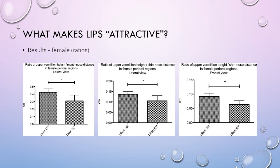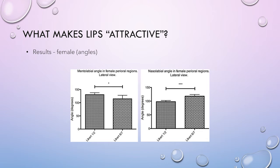The results showed that the ratio of upper vermilion height and mouth-to-nose distance in females was greater in the groups that received lower scores. The same trend was observed in the upper vermilion height and chin-to-nose distance ratio in both lateral and frontal views. The mentolabial angle and nasolabial angle of females in the lateral view exhibited opposing results: the mentolabial angle was greater in the Likert one-or-two group, while the nasolabial angle was greater in the Likert six-or-seven group. Stars above bars indicate p-values less than 0.05, meaning differences are significant.